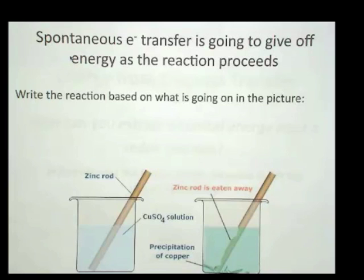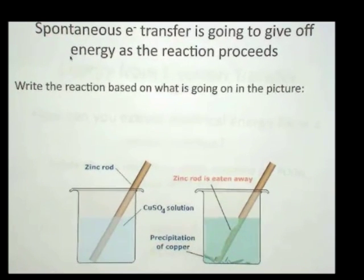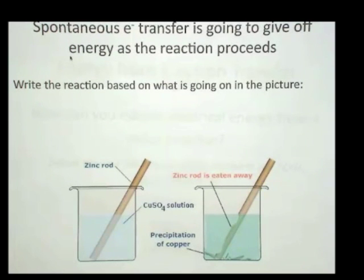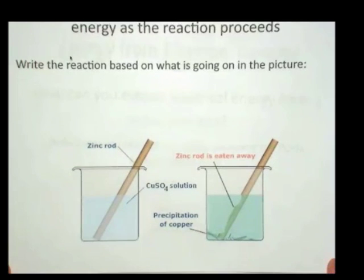Any time you have a spontaneous electron transfer, that is a chemical change in which electrons are transferred and the chemical change itself is spontaneous. You bring the reactants together and the reaction goes. That's what we mean by spontaneous. In those cases, energy is going to be given off. For example, in this particular reaction, we're going to look at this. This is a redox reaction, and energy is given off because it's spontaneous.